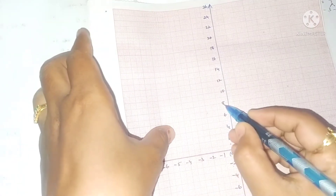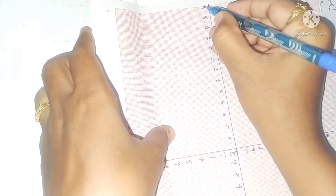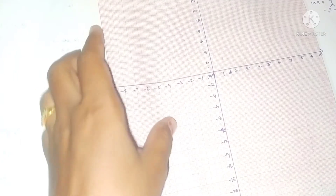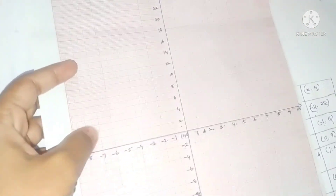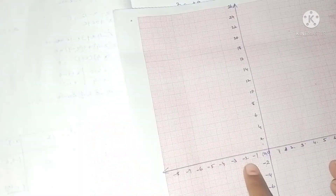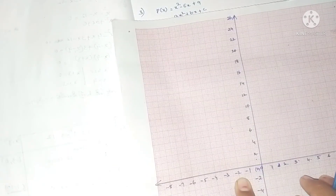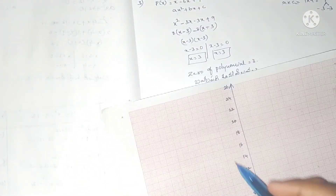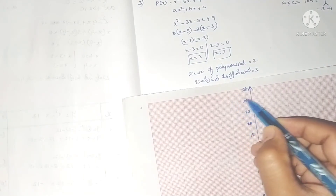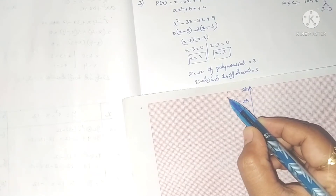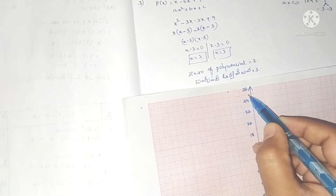On the y-axis we mark values 2, 4, 6, 8, 10, 12, 14, 16 up to 26. The same scale applies on the negative side. Now we will place the points on the graph. Plotting (-2, 25).